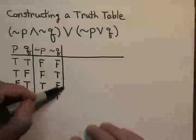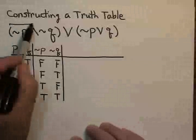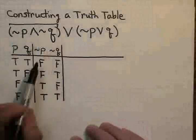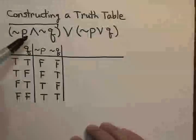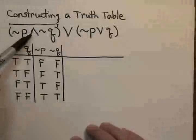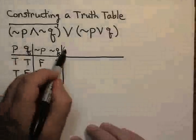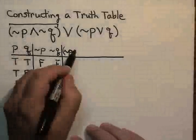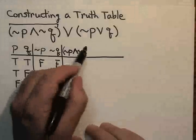Now, there are many ways to construct these truth tables, but what I'm going to do is take it a piece at a time. And now that I have not P and not Q, I'm going to create a column that creates the conjunction of those two. In other words, now I want the not P and not Q column.